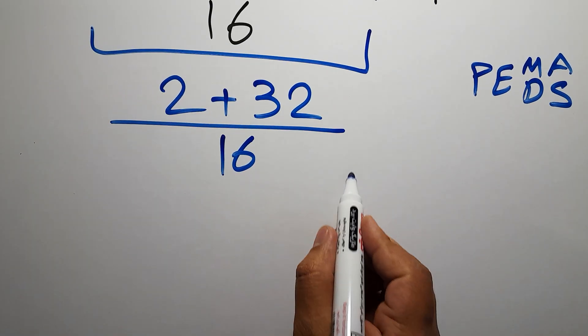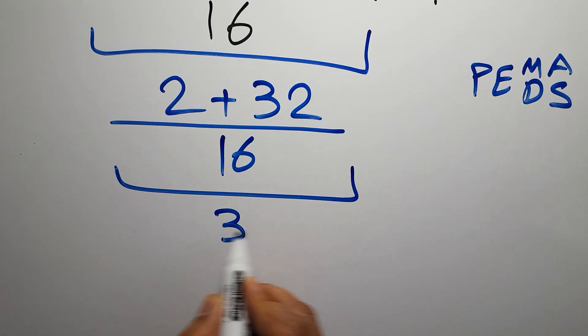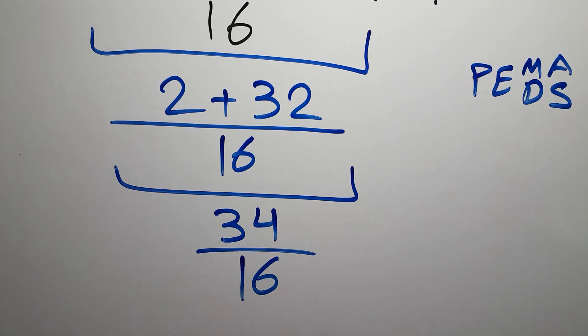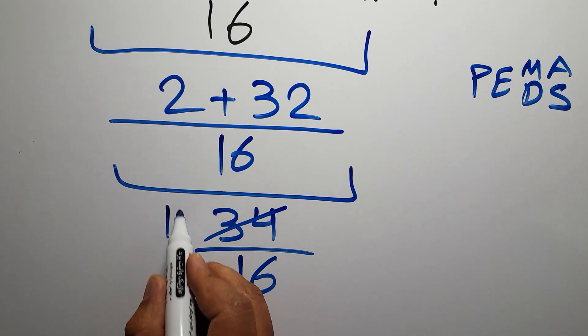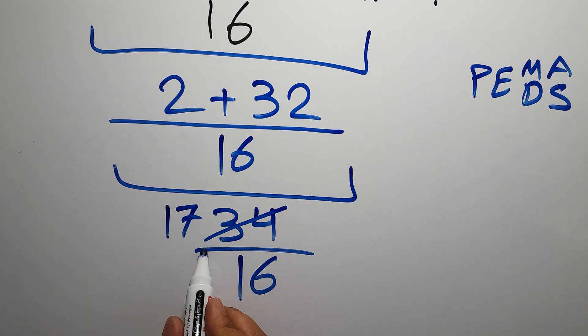So 34 over 16. Now 34 divided by 2 gives us 17, and 16 divided by 2 gives us 8, so we have 17 over 8.